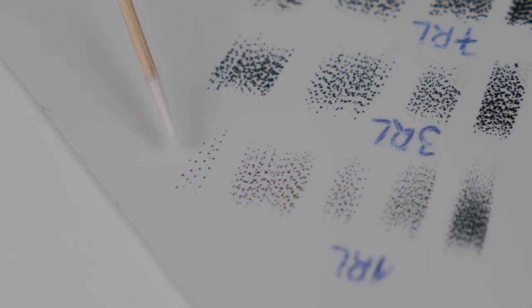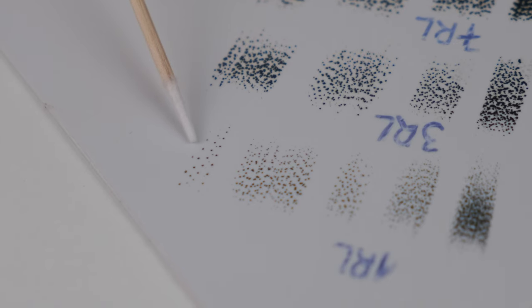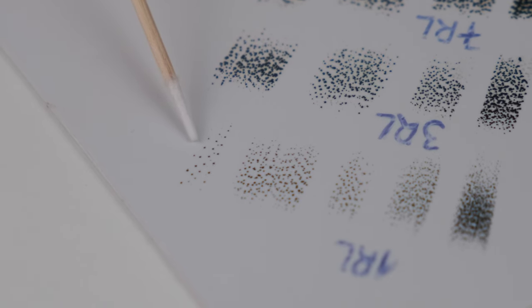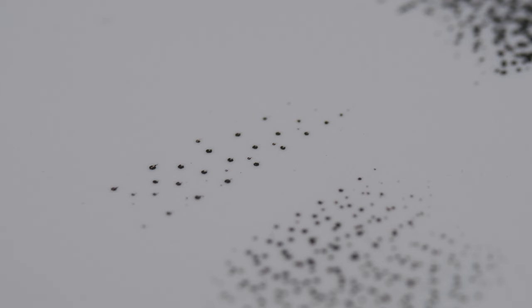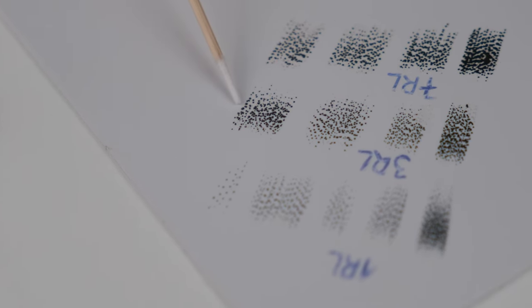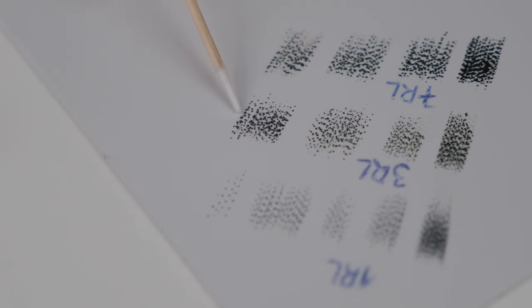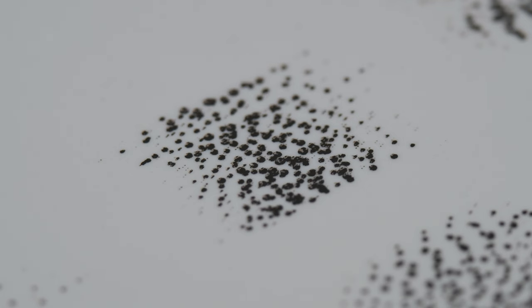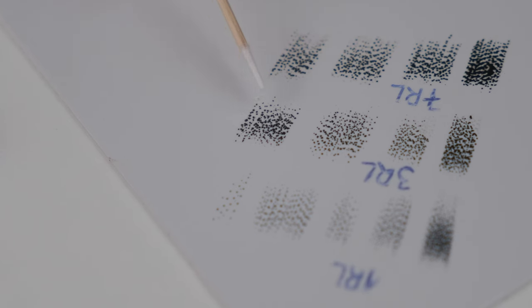One more time. Here you can see how one RL needle looks like. Pixel or dot is super small. I really like this. Here you can see that the pixel is a little bit bigger because we were working with a 3RL needle. And here you can see that a pixel is quite big.